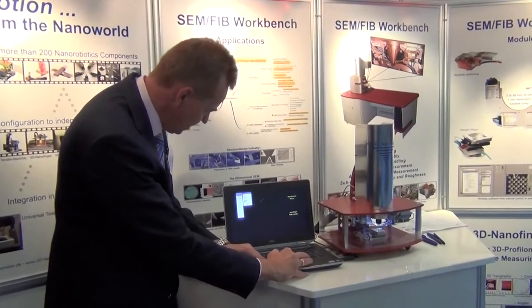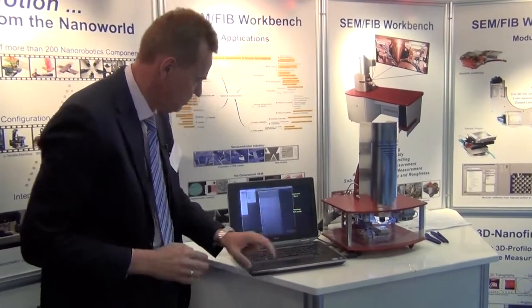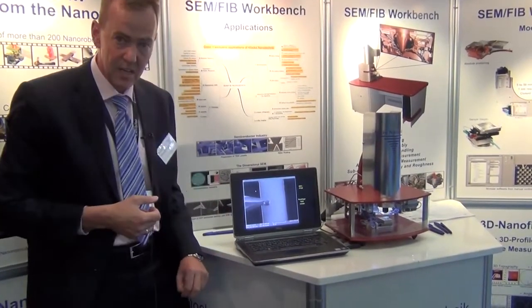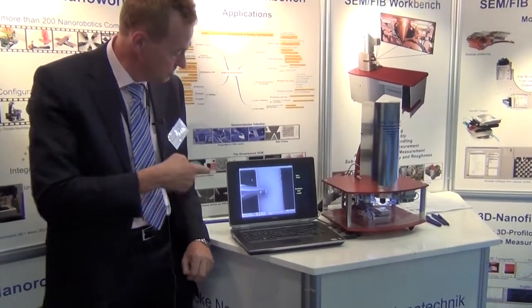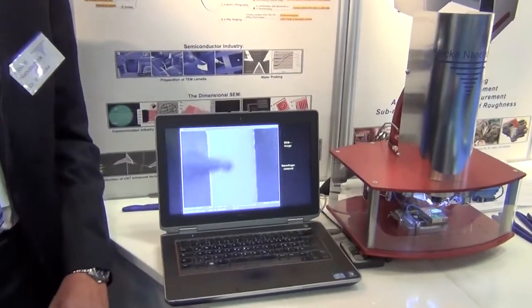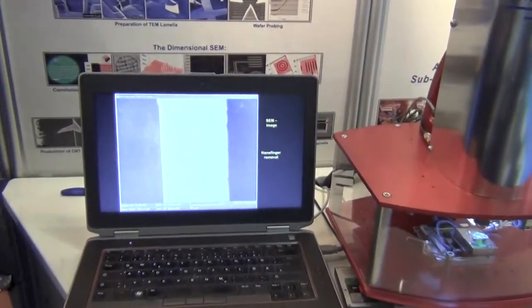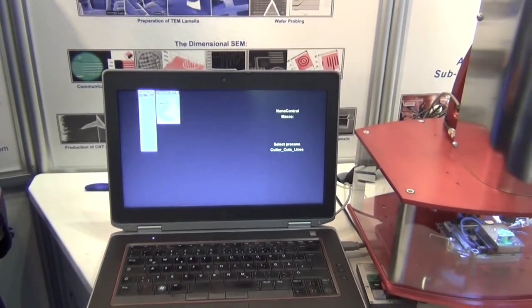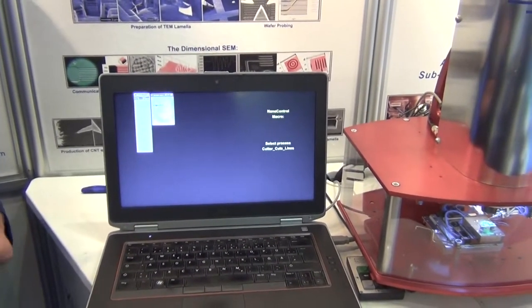You have an empty screen and you select the macro out of the list. This macro is called nanofinger finds sample. So at first, here's my sample. The nanofinger comes automatically into the field of view, detects the height of the sample and moves back again. Out of the field of view, nothing has changed except that we now know where the sample is.